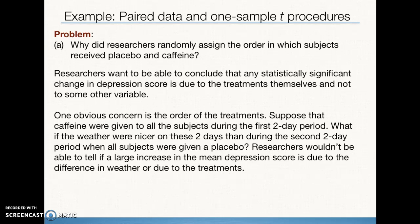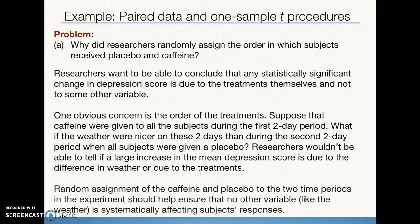We're always concerned about the order of the treatments. This is why we randomize. Suppose that caffeine were given to all of the subjects during the first two-day period. What if the weather were nice on those two days and nicer than on the second two-day period when then they were all taking the placebo capsules? Researchers wouldn't be able to tell whether the difference in depression was because of the weather or because of the caffeine treatment. Random assignment of the caffeine and placebo of the two-time periods in the experiment should help us make sure that there are no other variables like the weather that is affecting the subject's responses to the depression questionnaire.